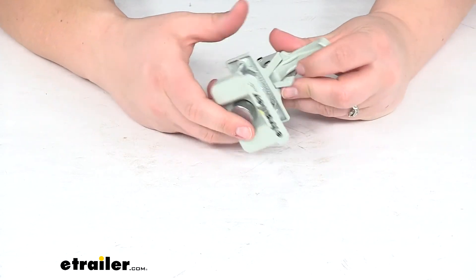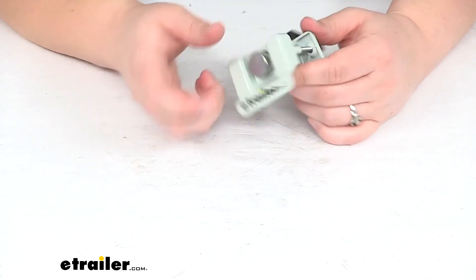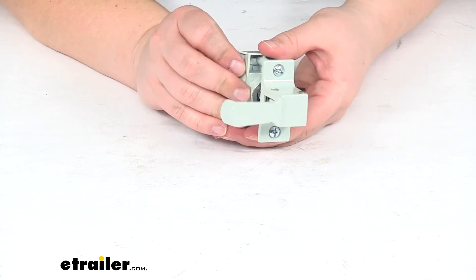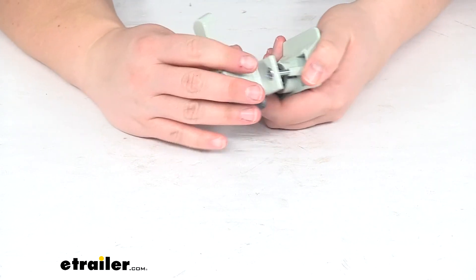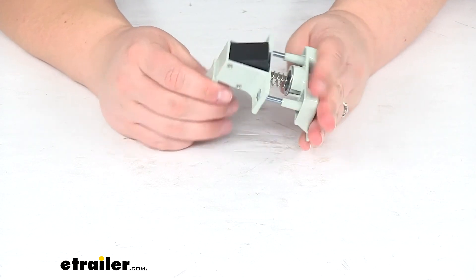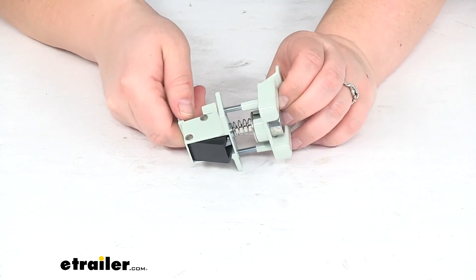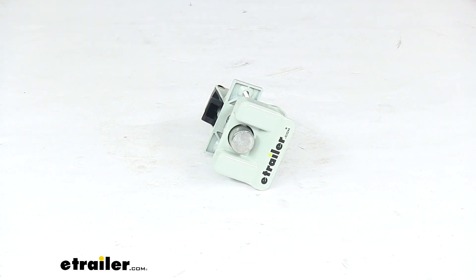That's going to do it for our look at the replacement latch for the Coleman screen doors. If you need any other replacement parts for your doors or any other component on your RV, you can always turn to eTrailer.com to find a lot of options to suit your needs. Thanks for watching and we'll see you next time.